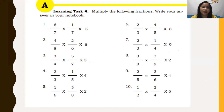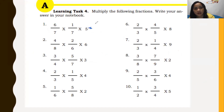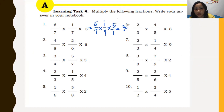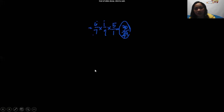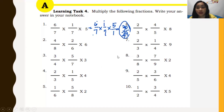In Learning Task number four, you are asked to multiply the fractions — it's very easy. For number one: six-sevenths times five. Convert the whole number five to five over one. Multiply numerators: six times five equals thirty. Multiply denominators: seven times one equals seven. The answer is thirty over forty-nine. For all whole numbers, just place them over a denominator of one. That's it for Math 5 Week 6 — thank you and goodbye!